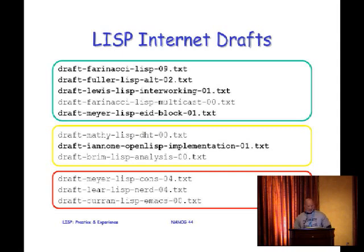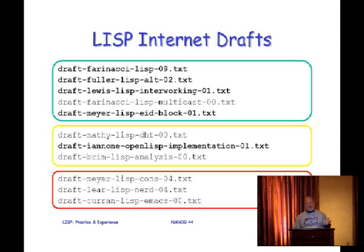Here are the Internet drafts. The top one is the base spec. Draft Fuller is the ALT spec — pretty straightforward and easy to read. The interworking spec is draft Lewis. I wrote draft Meyer LISP EID block, trying to get an EID prefix allocated by IANA. There's also the OpenLISP implementation from Luigi's crew in Brussels, who have an interesting idea about using DHT as a mapping system. Some earlier drafts in red are other mapping systems we tried in the early days.